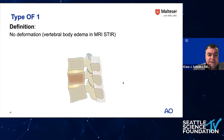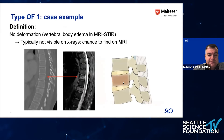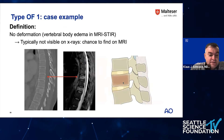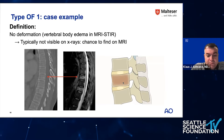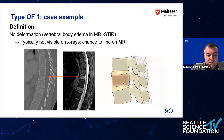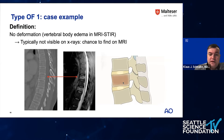Here are some examples to make things clearer. For OF1, you can see on the CT scan the lower fracture clearly, but for the level above it's difficult to say. Then on MRI, you see an edema in the STIR sequence — that would be a classical OF1.